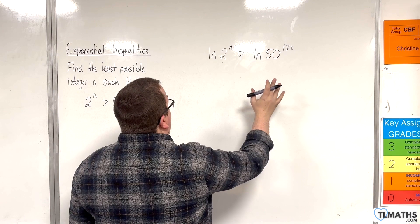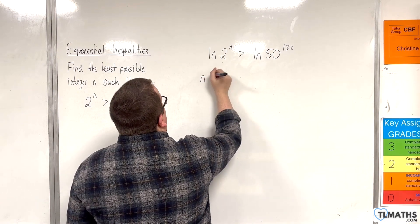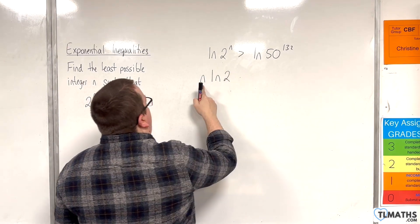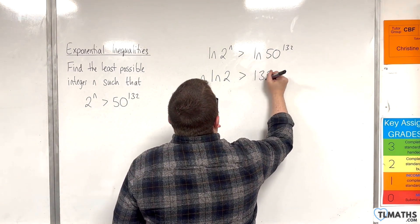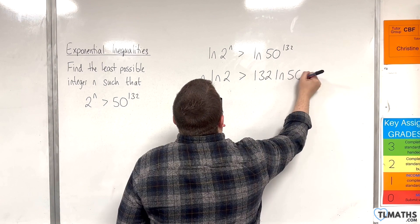So, we're going to use the power rule, bring the n down to the front. So, we've got n times the natural log of 2 is greater than 132 times the natural log of 50.